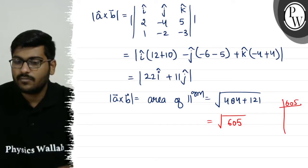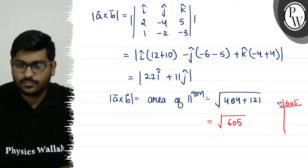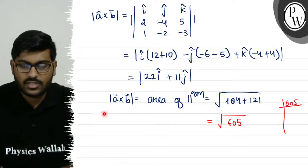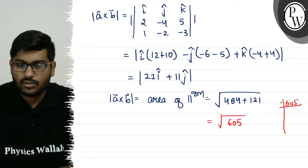If we simplify this, we get 22i-cap minus 11j-cap. The magnitude is the square root of 22 squared plus 11 squared. We can divide by 5, no, we factor out 11.